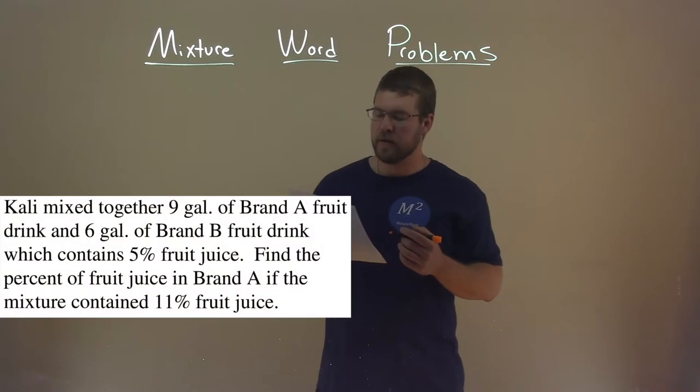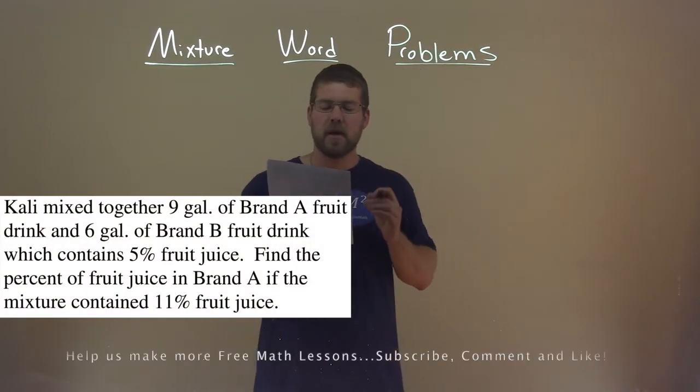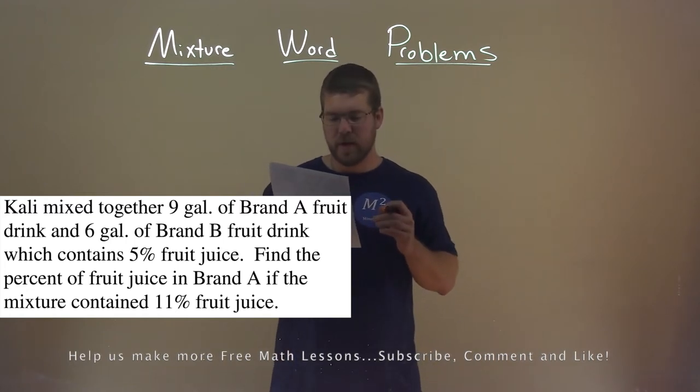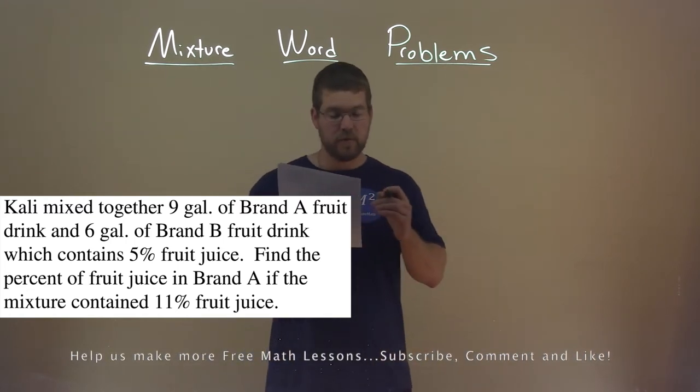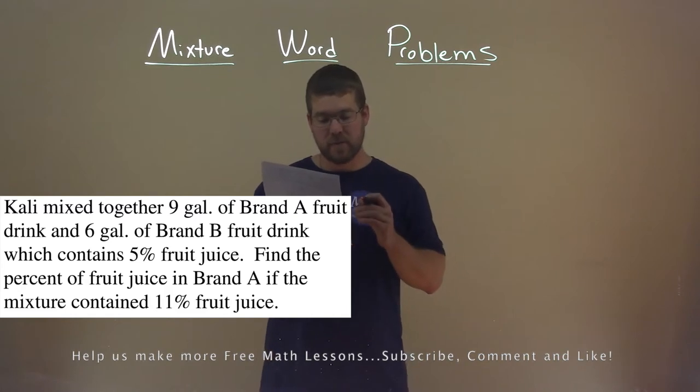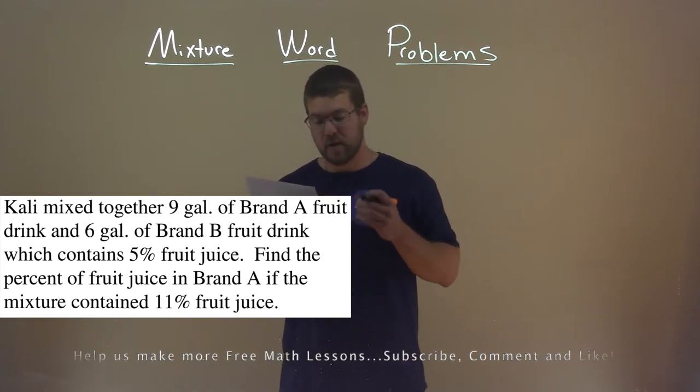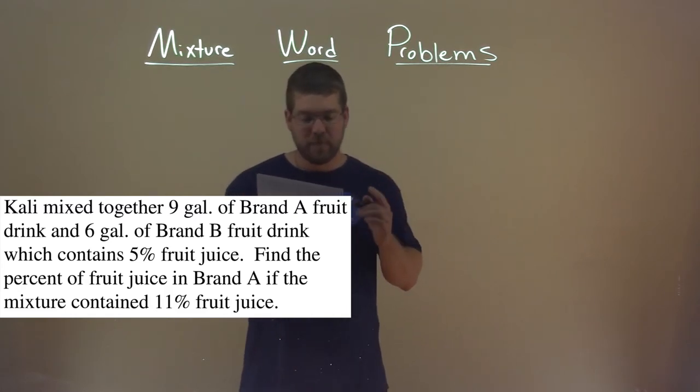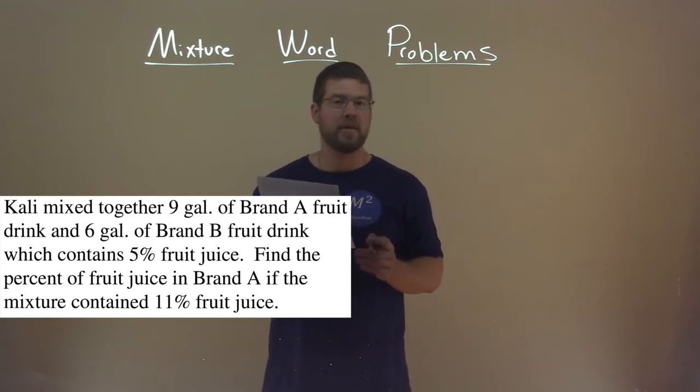We're given this problem right here. Kali mixed together 9 gallons of Brand A fruit drink and 6 gallons of Brand B fruit drink, which contains 5% fruit juice. Find the percent of fruit juice in Brand A if the mixture contained 11% fruit juice.